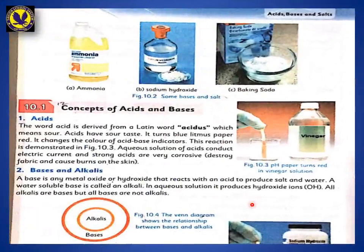The next page covers the Concepts of Acids and Bases. Here is the basic definition of acid and base. The word acid is derived from the Latin word 'Acidus,' which means sour. Acid has a sour taste. It turns blue litmus paper red. It changes the color of the acid-base indicator.